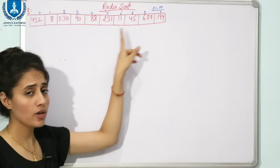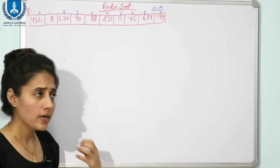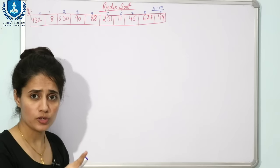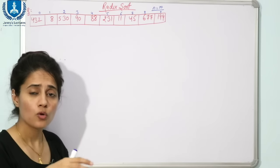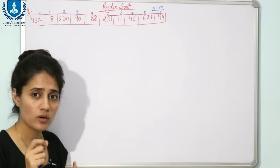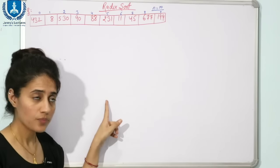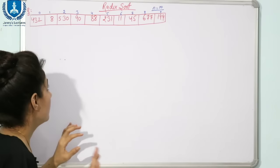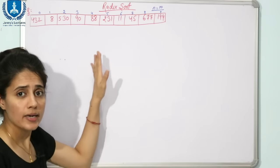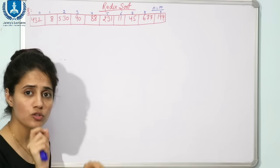We are going to take this example array with 10 elements and apply Radix Sort on it. Why we cannot apply Counting Sort on this kind of array — I have already discussed that in the previous video, along with the drawbacks of Counting Sort. So please go through that link first.